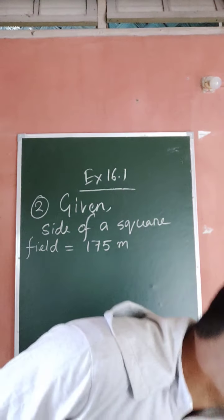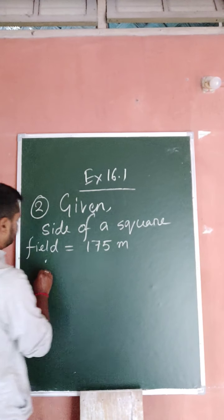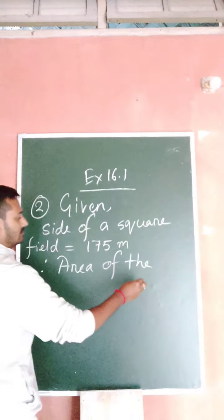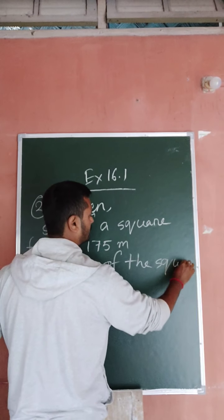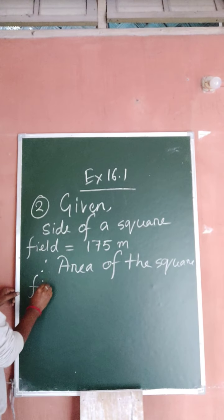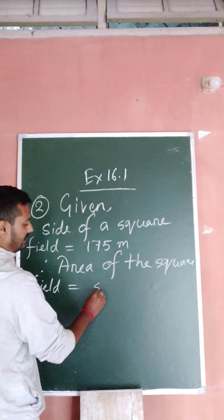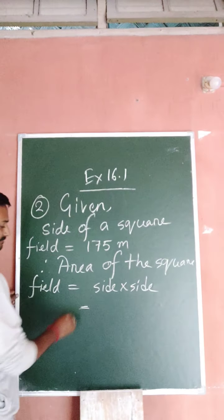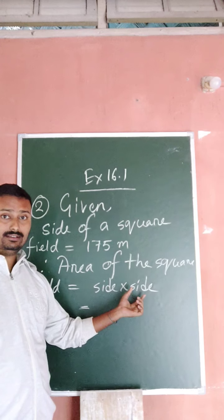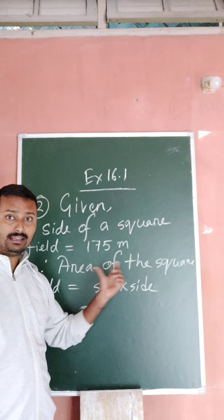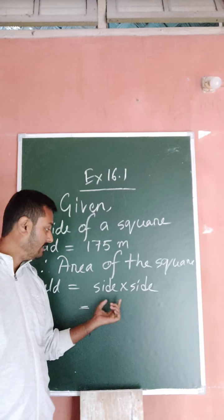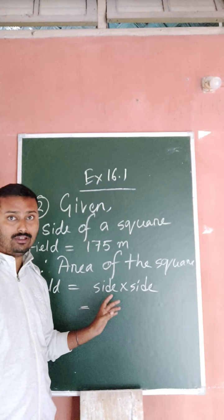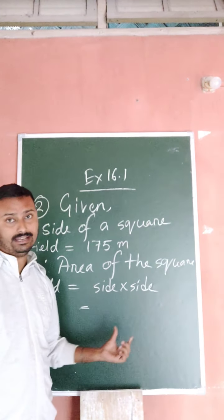All of you know that the area of the square is side into side. This formula actually comes from the formula of the parallelogram, that is rectangle: L into B. In case of square, L into B — but in case of square, all the sides are equal. That is why we consider the formula as side into side.